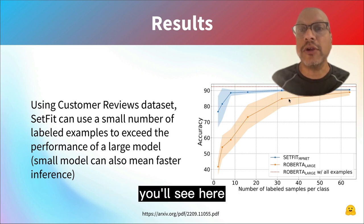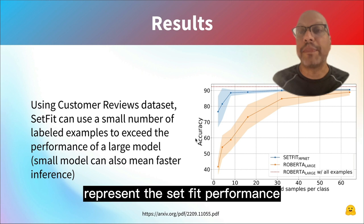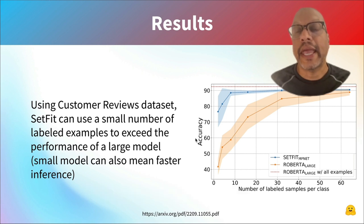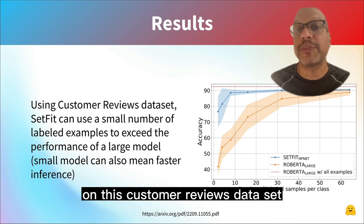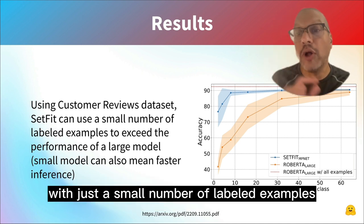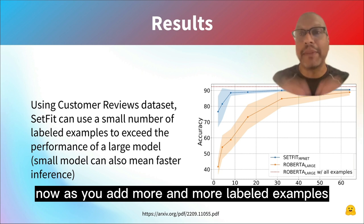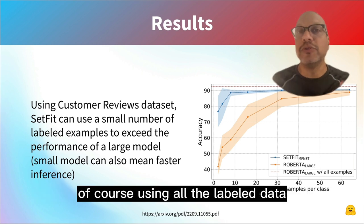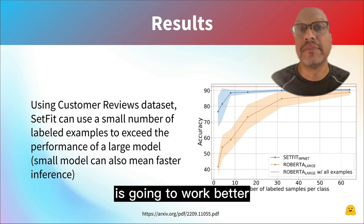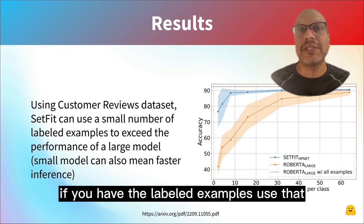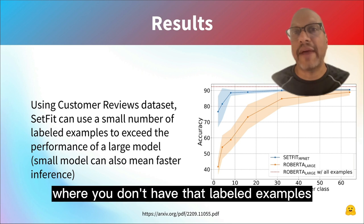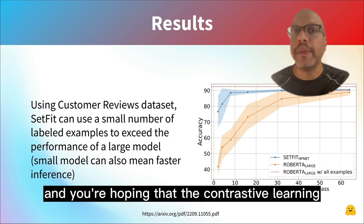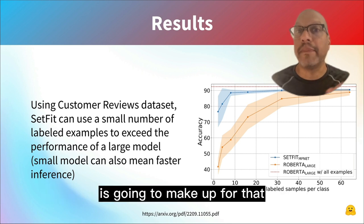You'll see here the blue line represents the SetFit performance, and you can see it gets pretty good performance on this customer reviews dataset with just a small number of labeled examples. Now, as you add more and more labeled examples, using all the labeled data is going to work better. This is really for a scenario where you don't have labeled examples and you're hoping that the contrastive learning is going to make up for that.